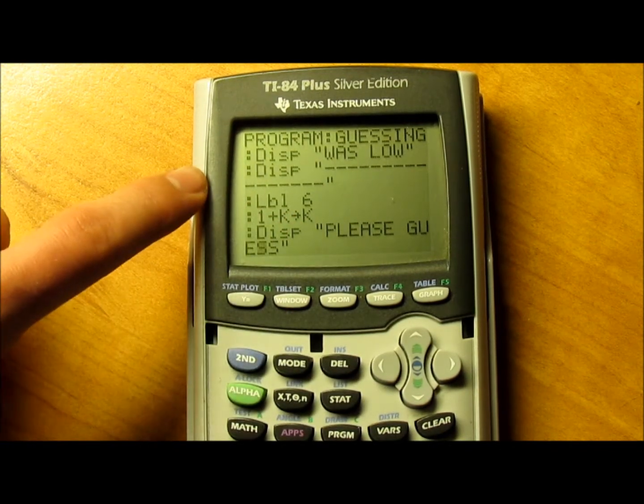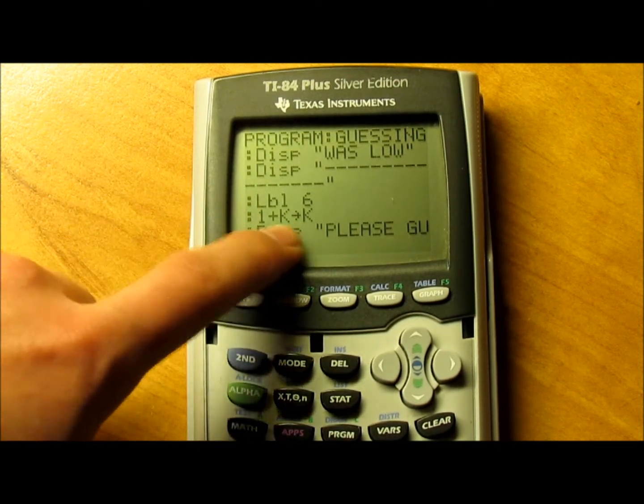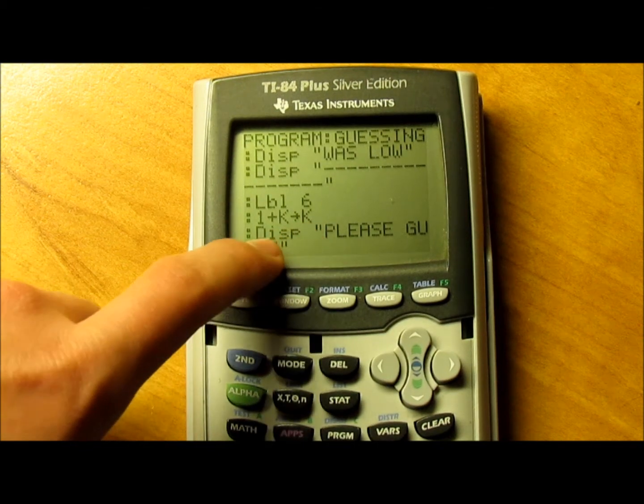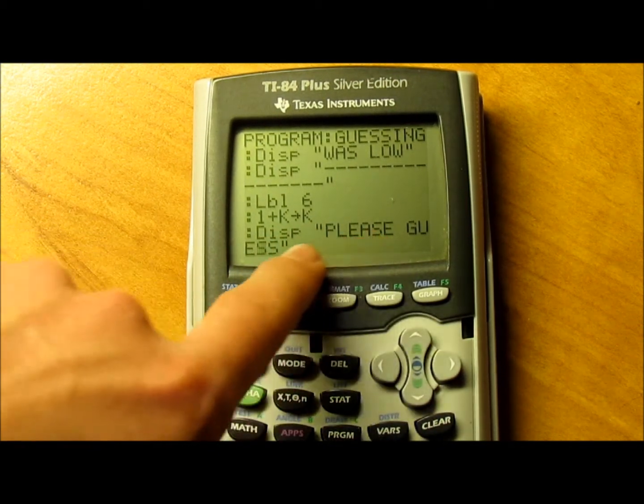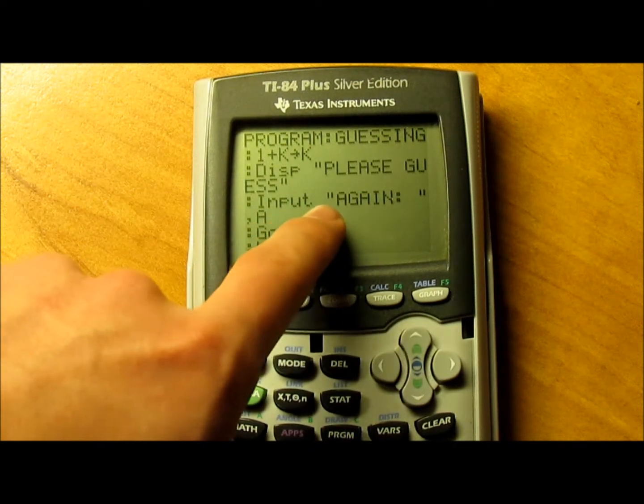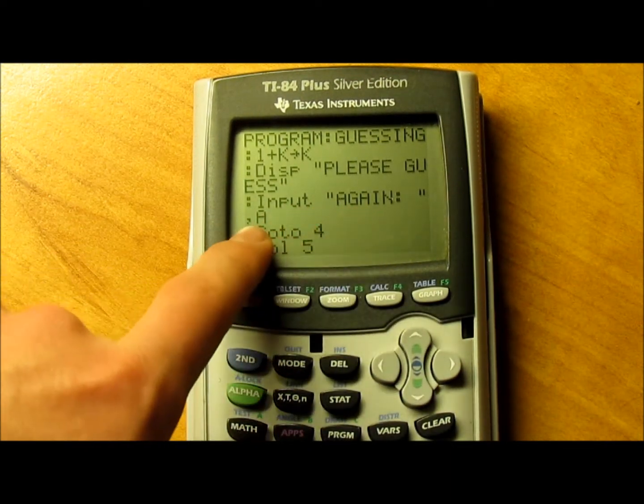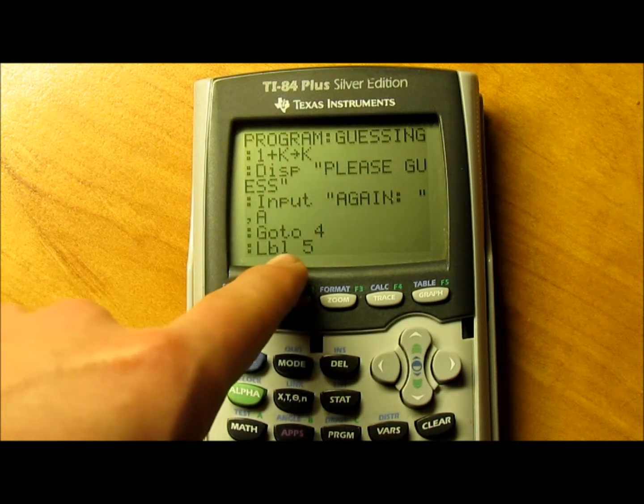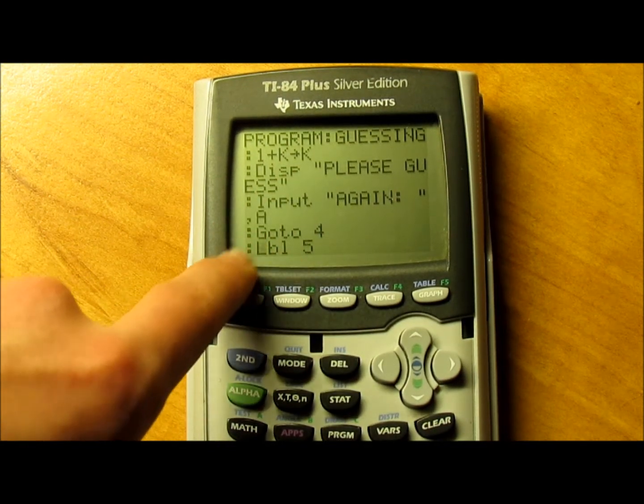Then you'll need label 6. 1 plus K store K. Then display please guess again in quotations. Then input in quotations again, comma A. Go to 4. Then label 5.